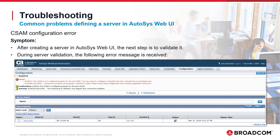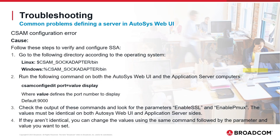Let's see another error we can get during server validation. We created a server and during validation we got the following error: CSAM is not configured properly for port 9000. It appears there may be an issue with the configuration of the Secure Socket Adapter (SSA) for port 9000 between the Web UI and the application server. Follow the steps below to verify and configure the SSA.